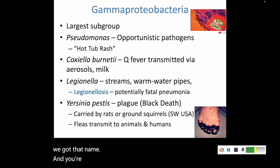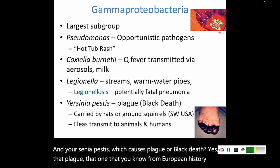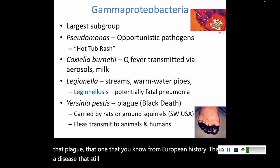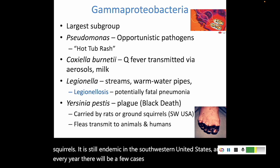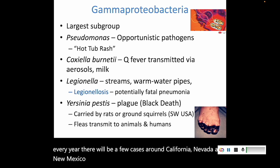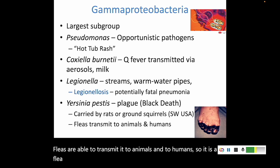Yersinia pestis causes plague, or the Black Death — the one you know from European history. This disease still exists; it can be carried by rats and ground squirrels and is still endemic in the southwestern United States. Every year there are a few cases around California, Nevada, and New Mexico. Fleas are able to transmit it to animals and to humans, so it is a flea bite that causes the plague.